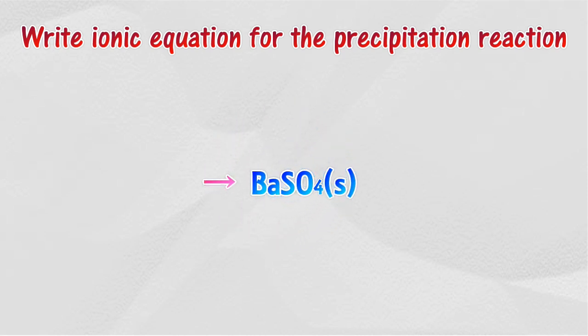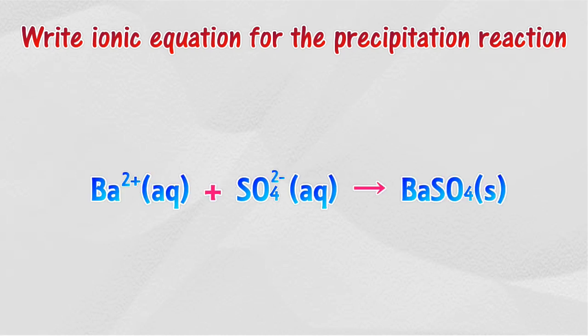Here is the easy way to write an ionic equation for a precipitation reaction. First, identify the insoluble salt that is formed and write it on the right side of the equation. Then, separate the cation and anion of the insoluble salt and write them on the left side of the equation. Thank you for taking time to watch this.